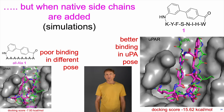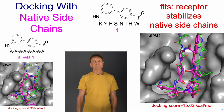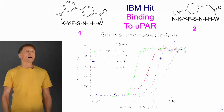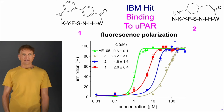So we made compounds one, two, and three and began to test them, first of all in a fluorescence polarization assay. In green, we showed the binding for our control AE105 as a Ki relative to the other control, FITC-labeled. Then we show the binding as Ki values in micromolar for compounds one, two, and three. Compounds one and two were better than three in fluorescence polarization.